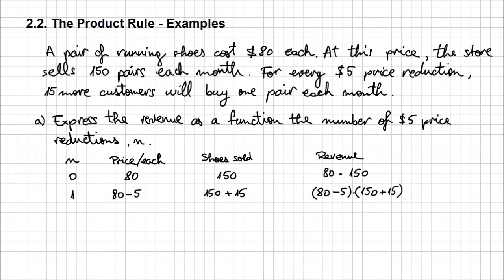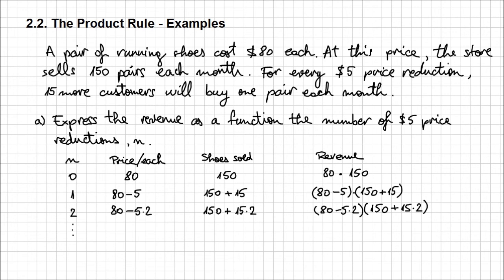What would happen if you had two price reductions — reducing the price by $10? So n = 2, then the price is going to be 80 minus 5 times 2, and the shoes sold would be 150 plus 15 times 2. The revenue function, again, is the product of this price per unit times the shoes sold when n equals 2.